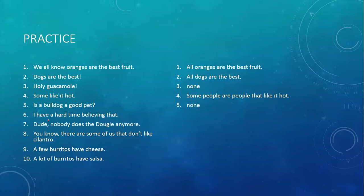I have a hard time believing that. Notice this isn't a proposition about the thing you're having a hard time believing — this is a proposition about you. So all I am a person that has a hard time believing that. The 'am' is the same thing as 'is' or 'are' — it's the verb to be. So: all I is a person that has a hard time believing that.